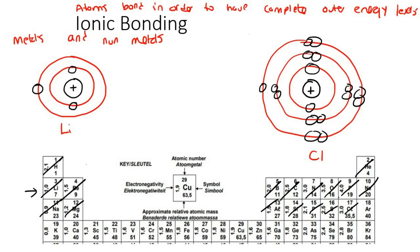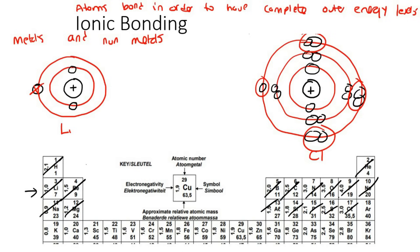In that lesson we learned that lithium would rather lose its one outer electron, because it would be more difficult for it to try to gain seven electrons. Chlorine already has seven electrons on the outside and only needs one more to have eight, which is a complete energy level.